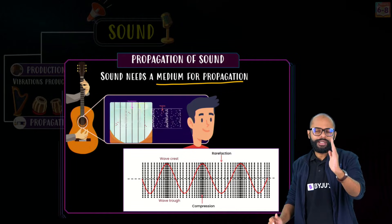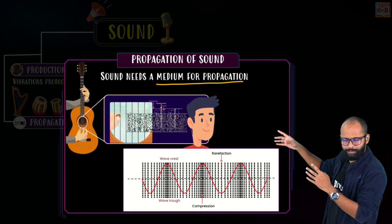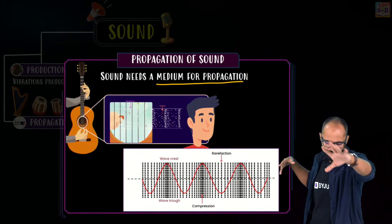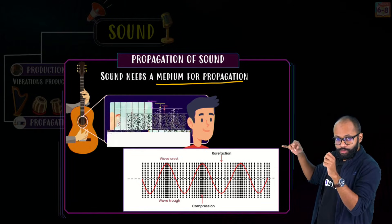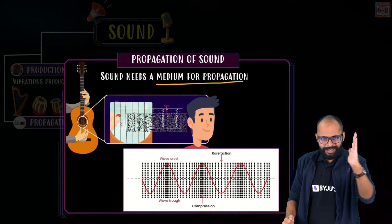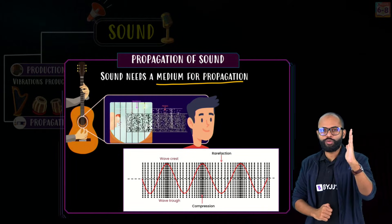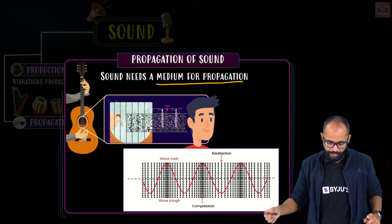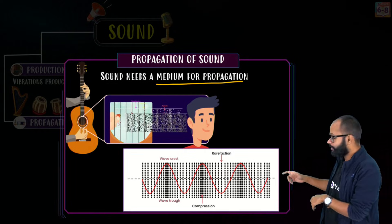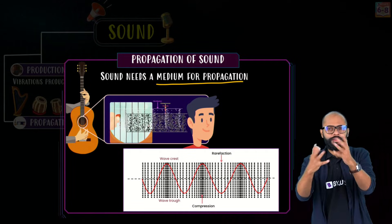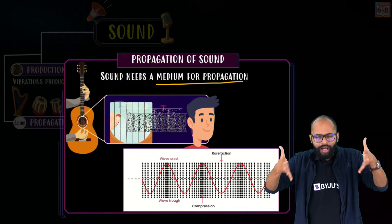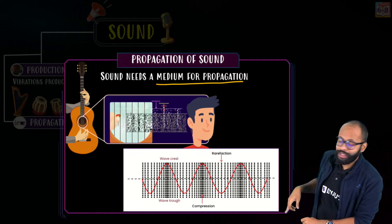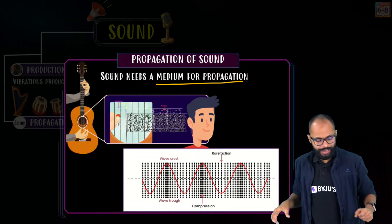When you strike a string, it presses the air molecules next to it. These pressed molecules pass the disturbance forward — that is how sound travels. This creates compressions and rarefactions. Compressions are regions where air molecules are close together — high density and pressure. Rarefactions are regions where air molecules are far apart — low density and low pressure.